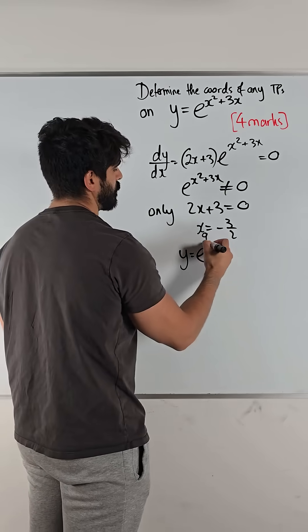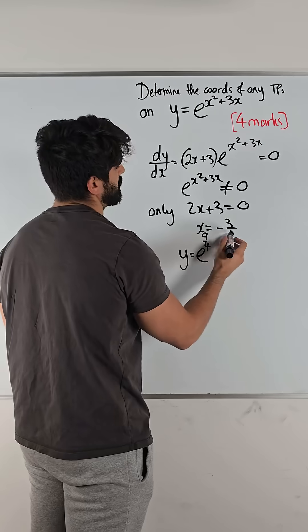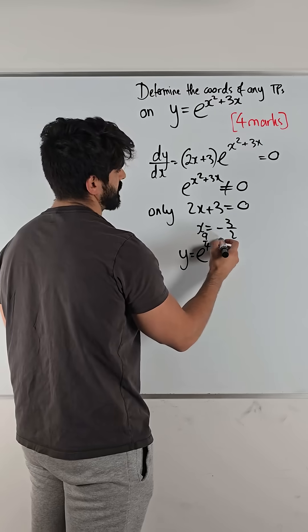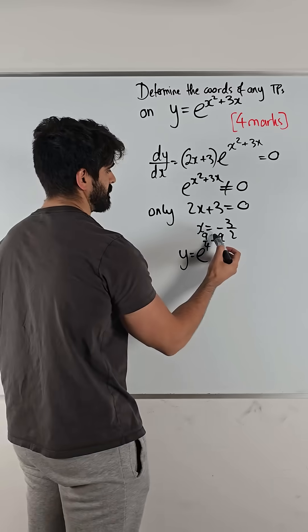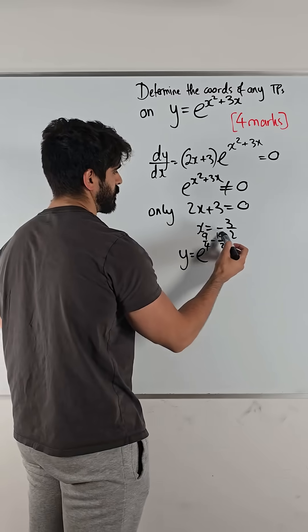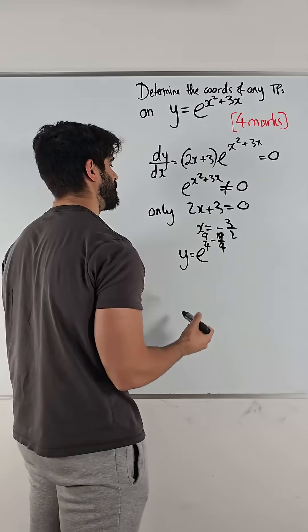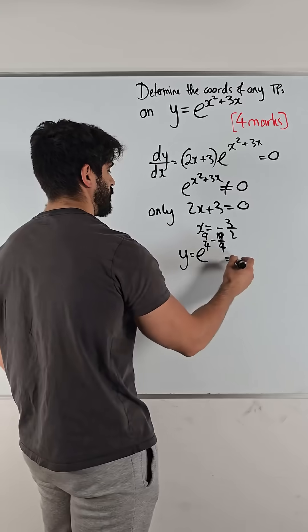9 over 4, 3 times this, 3 times this minus 9 over 2, which is minus 18, which is 18 over 4. 9 minus 18 is minus 9 over 4.